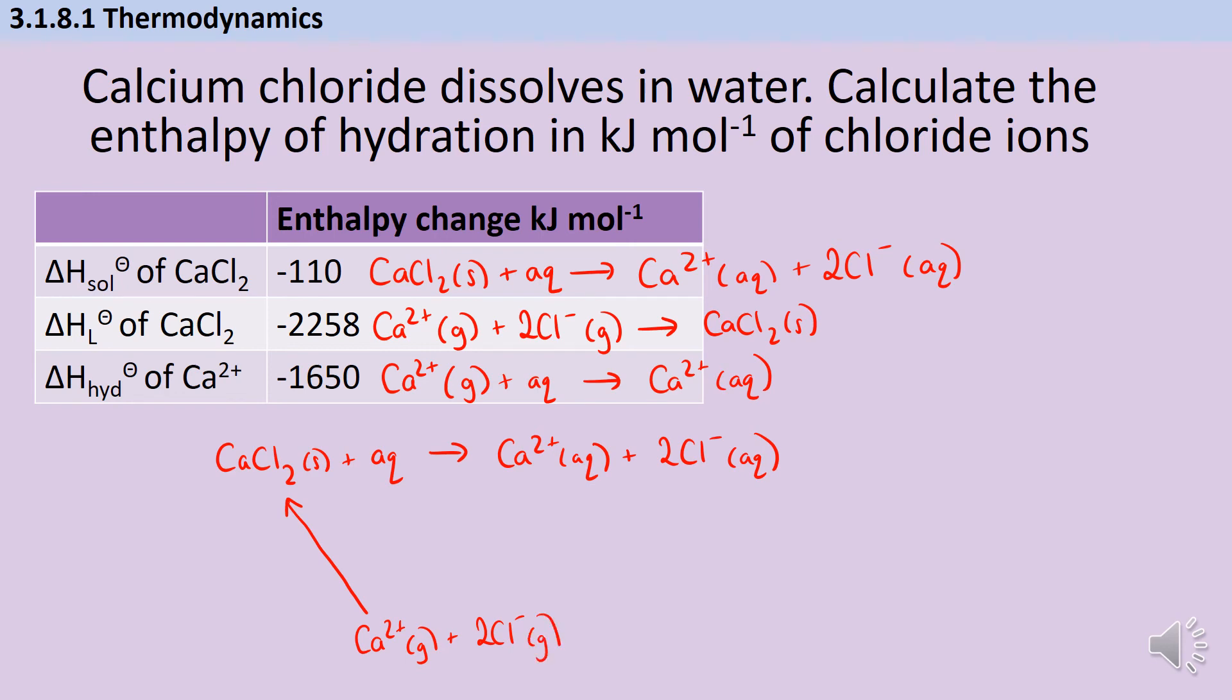That's the enthalpy change I can't measure directly. And then up here to be the right side of the cycle, I know that coming from the calcium I've got one arrow which has a value of -1650. And then I've also got this arrow here which I'm going to need to calculate the value of. We're going to call that 2x because there are two moles of chloride ions. And then this first enthalpy change was -110 for the enthalpy change of solution, and the enthalpy change of lattice formation is -2258.